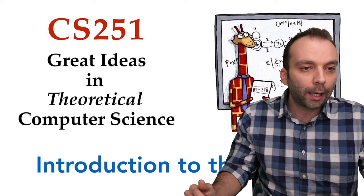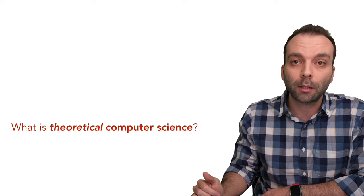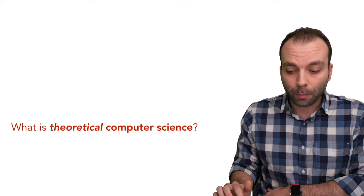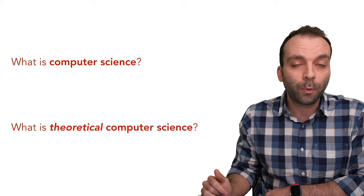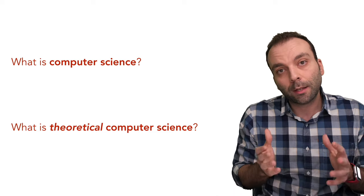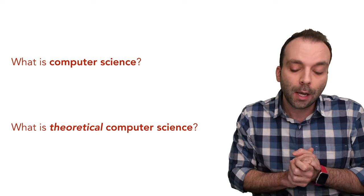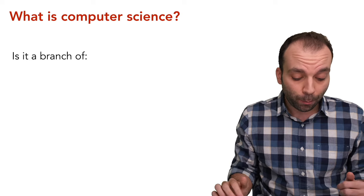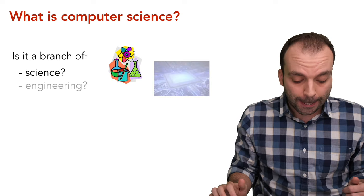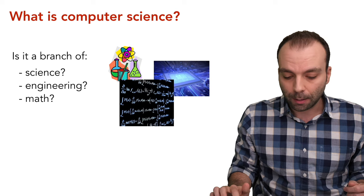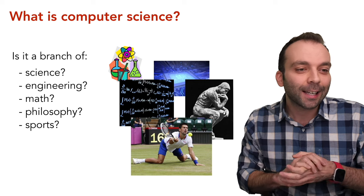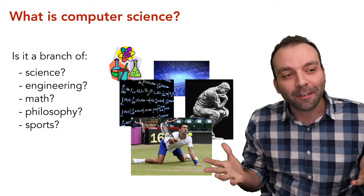Let's start with the most basic question: what is theoretical computer science? Before we can answer that, we should ask a more basic question — what is computer science? And then what does the word 'theoretical' add? I want to ask you: what is computer science? Is it a branch of science, engineering, mathematics, philosophy, or sports?